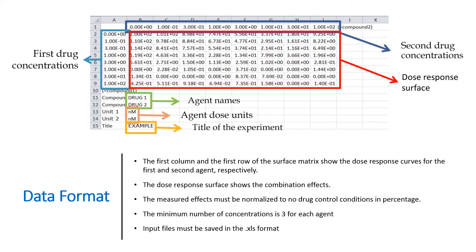To start the analysis, you need to format the input data file according to the data format as shown here. The first column and the first row of the surface matrix show the dose-response curves for the first and second agent, respectively. The dose-response surface shows the combination effects. The measured effects must be normalized to known drug control conditions and values must be tabulated in percentage. Hence, the first cell of the surface matrix is 100 and the other cells of the matrix show positive values between 0 and 100. In case of cell growth assay, measured effects are the surviving fractions. You can add or remove both rows and columns from the matrix to obtain the format that is appropriate for your experimental design.